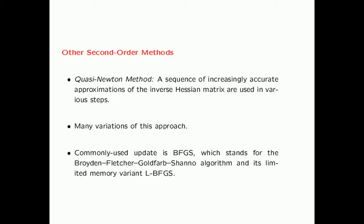Other second-order methods include quasi-Newton methods, in which a sequence of increasingly accurate approximations of the inverse Hessian are used at each step. The most commonly used variant is BFGS, and it has a limited-memory variant called L-BFGS, which uses limited memory and can be useful in many neural network settings. In practice, the conjugate gradient method is more popular than BFGS for neural networks.